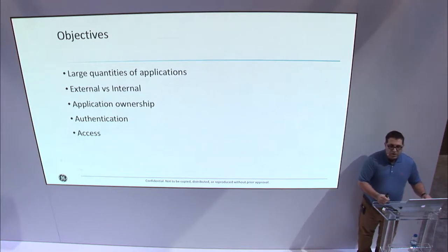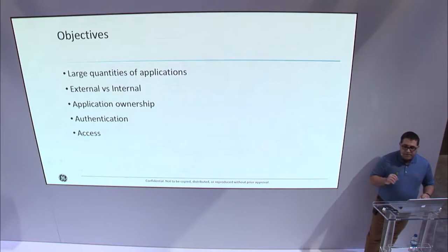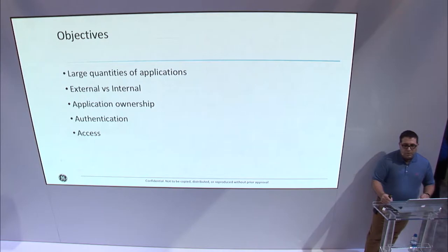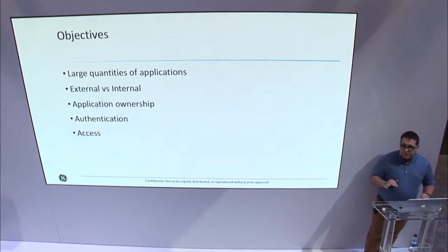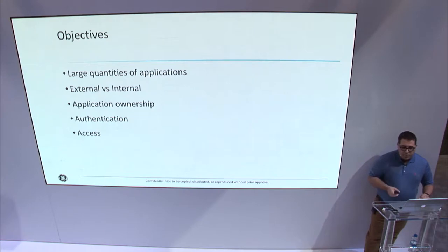Since our current scope is external applications, we are also going to need to identify which of our applications resolve from external connections. We need to know if an application is directing us to an authentication prompt, and finally, how do our business owners access this data once we run it through Qualys?